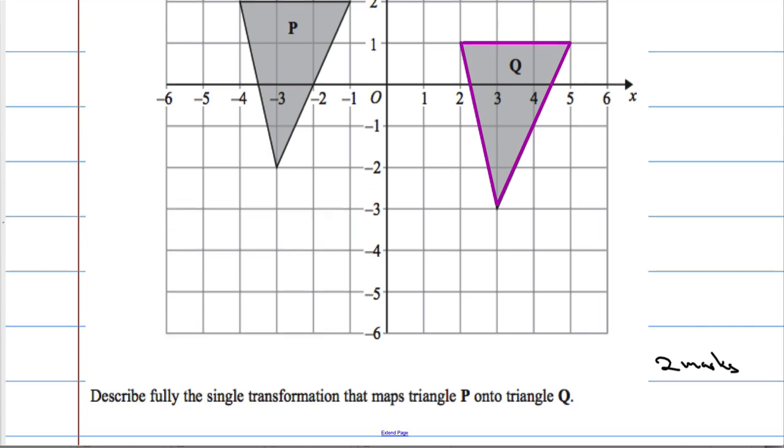And this type of transformation is a translation along the vector. We said it goes six right and one down - how do I describe that using a vector? Six on the top and then negative one on the bottom.